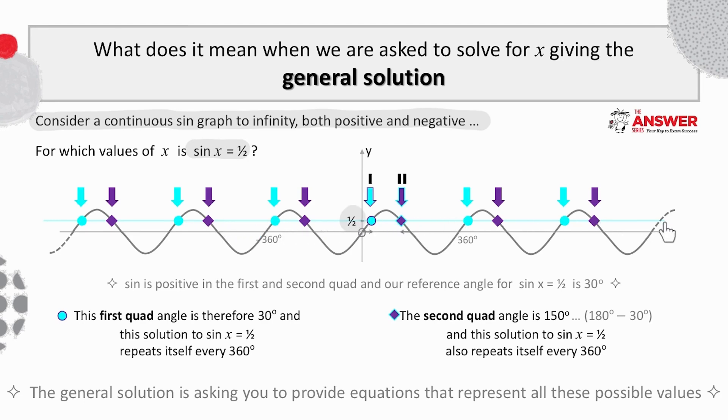And so if we look at the equation of sine x equals a half, we observe first that sine must be positive, in other words, our solutions will be in the first and second quads, and that the reference angle is 30 degrees.